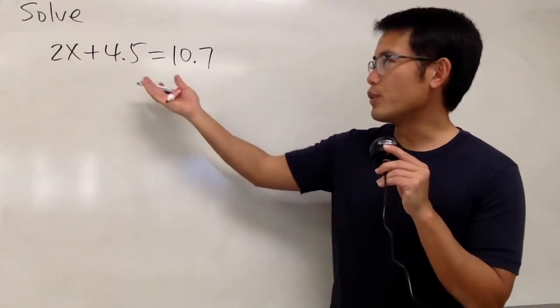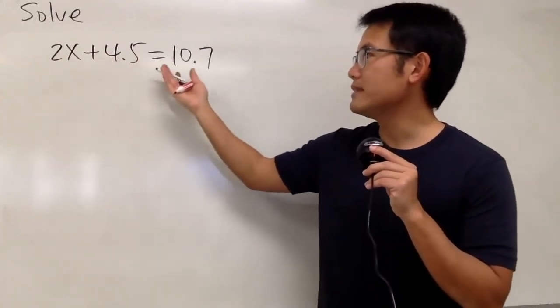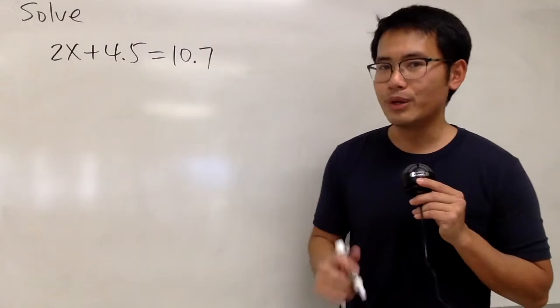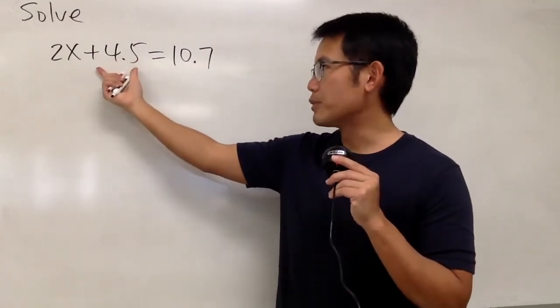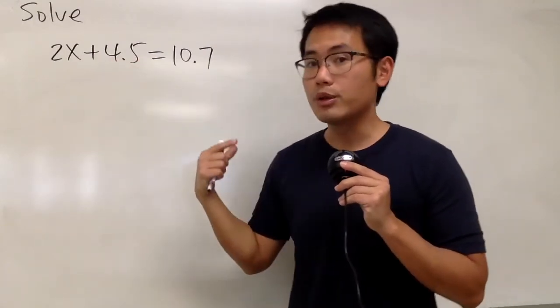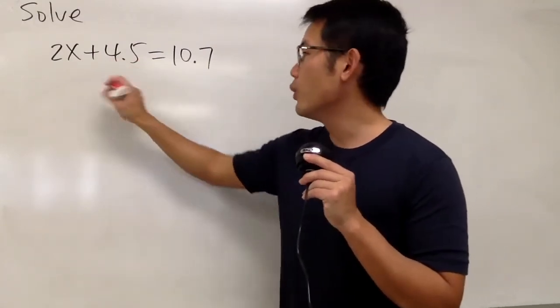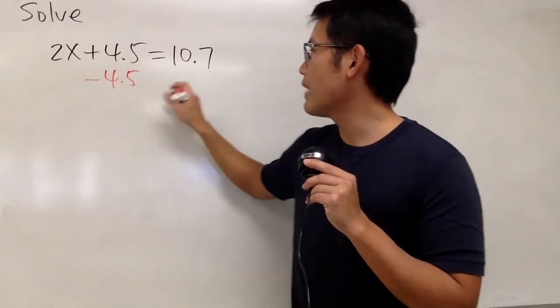We are going to solve this equation: 2x plus 4.5 is equal to 10.7. Here we go. First, you see that we have this number right here. We are going to get rid of that, and to do so, we can just minus 4.5.